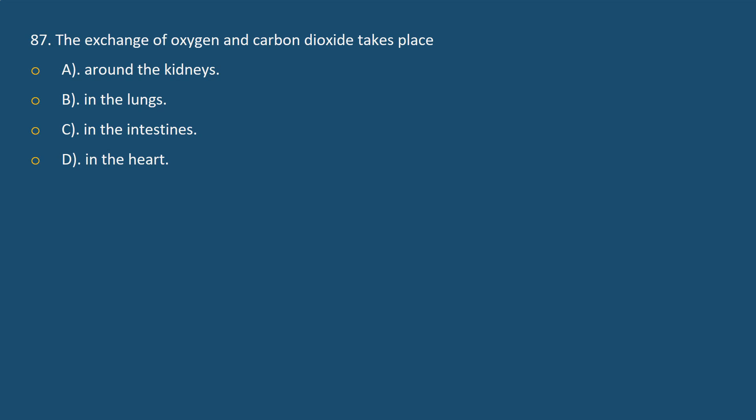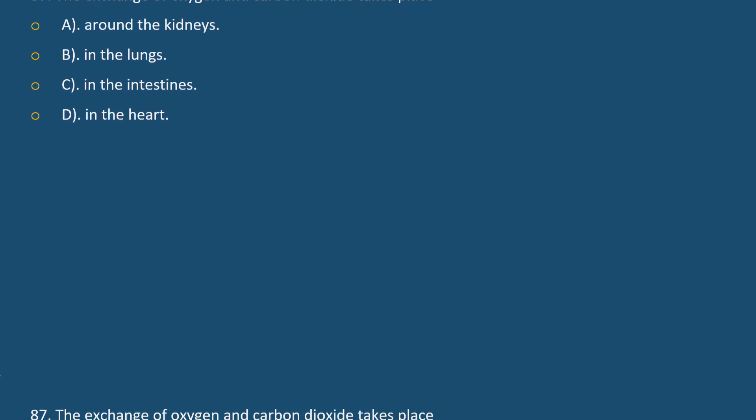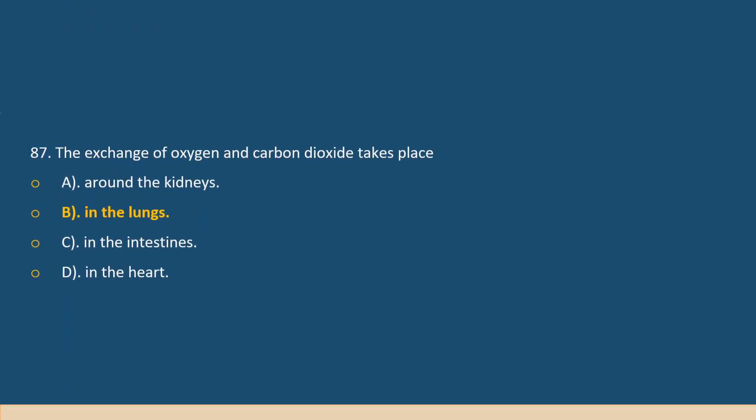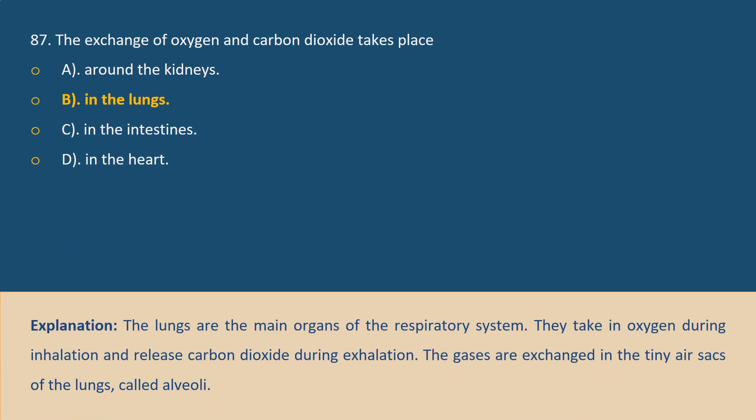Question 87: The exchange of oxygen and carbon dioxide takes place: A. Around the kidneys, B. In the lungs, C. In the intestines, D. In the heart. Answer B. The lungs are the main organs of the respiratory system. They take in oxygen during inhalation and release carbon dioxide during exhalation. The gases are exchanged in the tiny air sacs of the lungs, called alveoli.